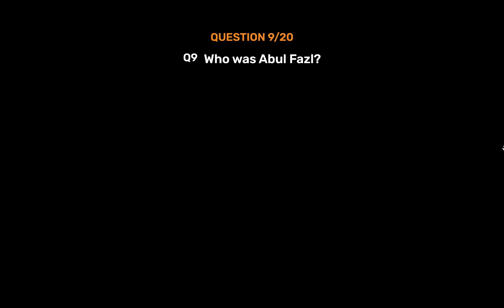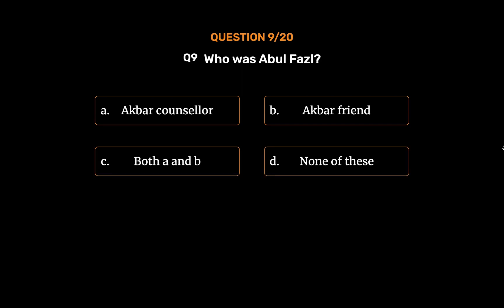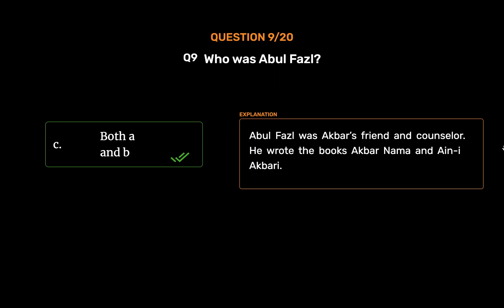Question 9: Who was Abul Fazl? Option A: Akbar's counselor. Option B: Akbar's friend. Option C: Both A and B. Option D: None of these. The correct answer is Option C, Both A and B. Abul Fazl was Akbar's friend and counselor.